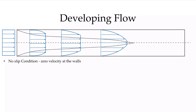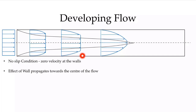In the developing flow region, we have the no-slip condition, and therefore we have zero velocity at the walls. When we have the plug flow entering the pipe, there is a very quick change where velocity goes to zero. As we move down in the flow direction, the region affected by this no-slip condition gets larger and larger until it covers the whole cross-section of the pipe at the end of the developing flow region.